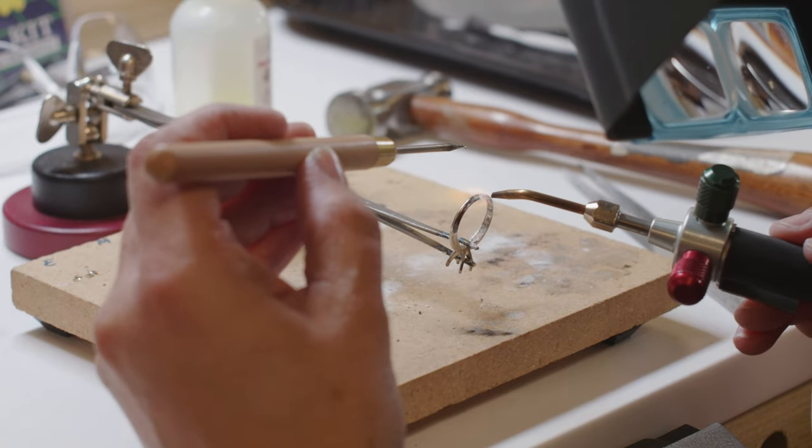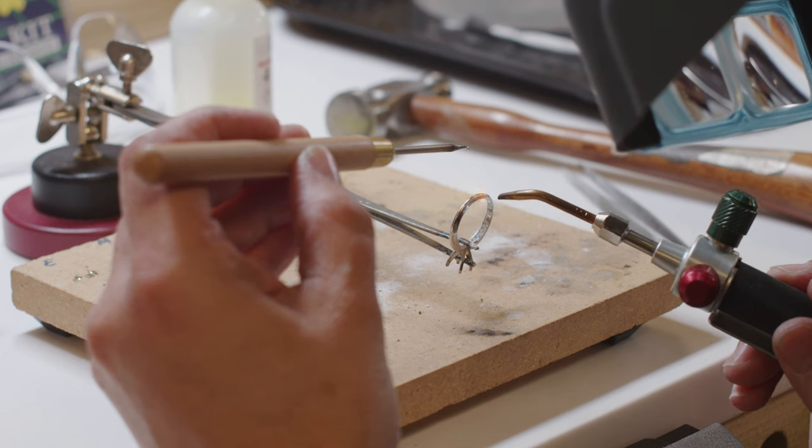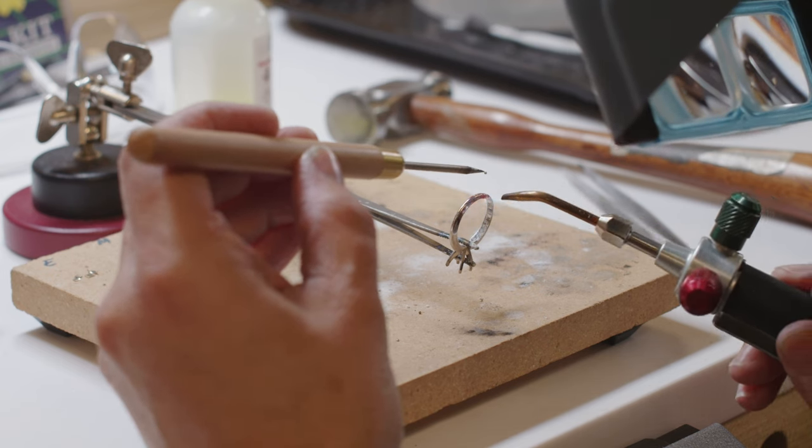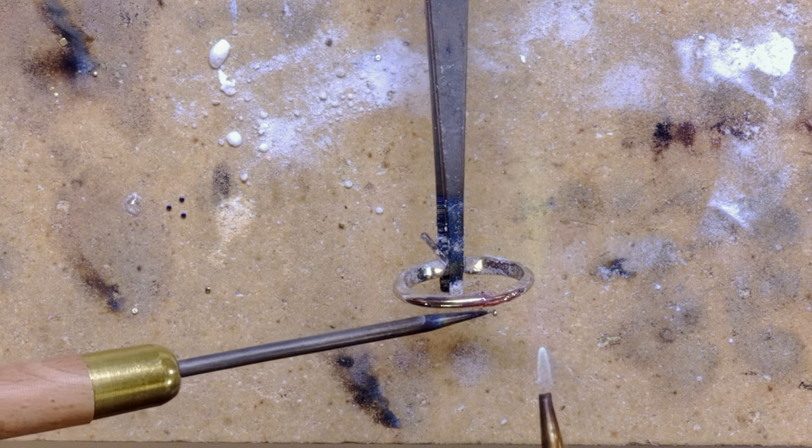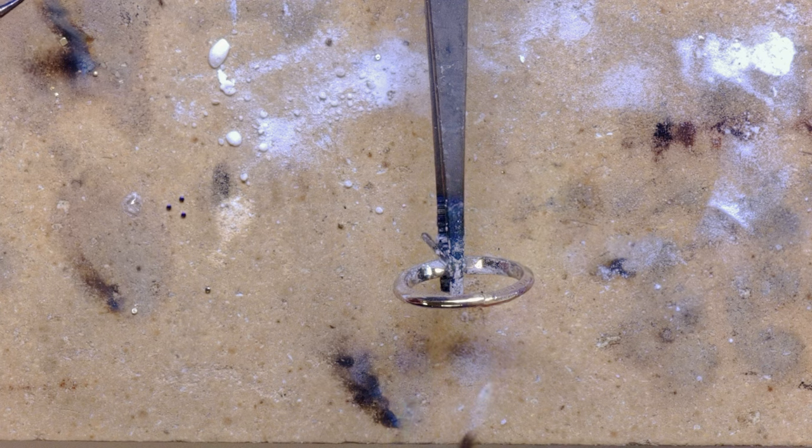Evenly, because the solder is going to tend to flow to the side that's the hottest. You don't need to go real fast. Slowly heat it up, and then we're going to drop our little solder on there. And there we go.